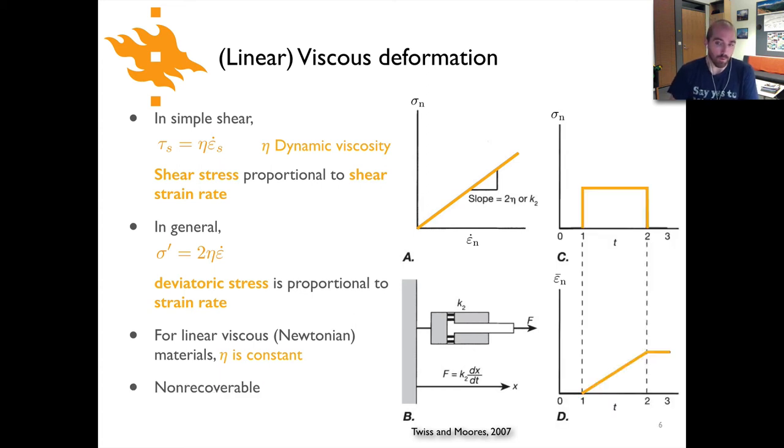For viscous deformation, we have plots of stress versus time and strain versus time. We go from no stress to a constant stress and then back to zero. From time zero to one there's no stress, constant stress between times one and two, then no stress afterwards. The constant stress results in continually increasing strain.